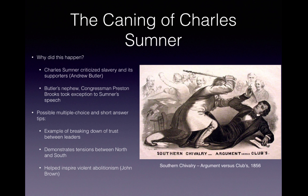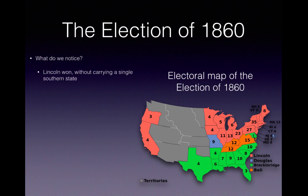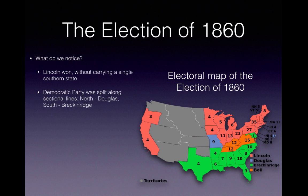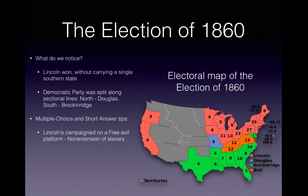The Election of 1860 is specifically mentioned in the new curriculum. Lincoln won without carrying a single southern state. The Democratic Party was split along sectional lines: in the north, Stephen Douglas won only Missouri; in the south, Democrats voted for John C. Breckinridge. Know that Lincoln campaigned on a free soil platform — non-extension of slavery. The impact was that southern states began to secede; South Carolina was first, on December 20, 1860.